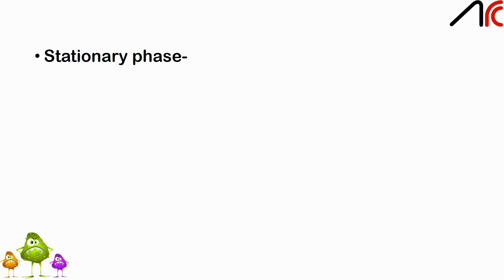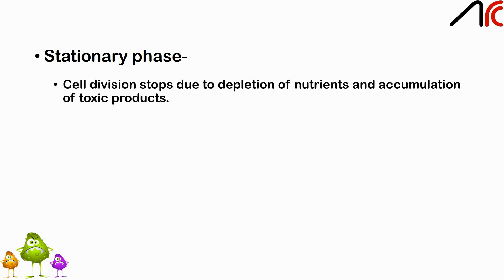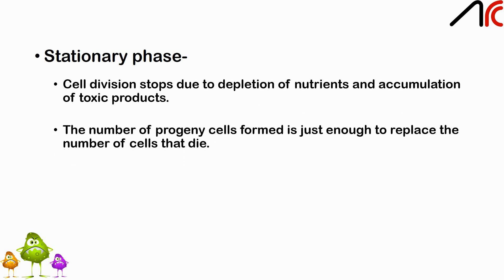Stationary phase: cell division stops due to depletion of nutrients and accumulation of toxic products. The number of progeny cells formed is just enough to replace the number of cells that die.